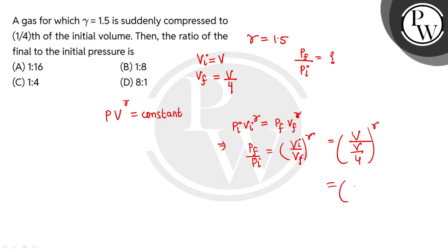To the power gamma. This will come up as 4 to the power gamma, where gamma value is 1.5. 1.5 is 3/2, right? So this will be 4 to the power 3/2. How do you solve this? This will be 4 to the power 1/2, to the power 3.